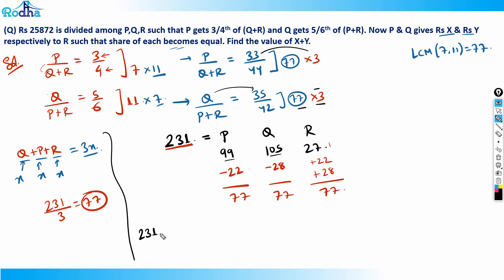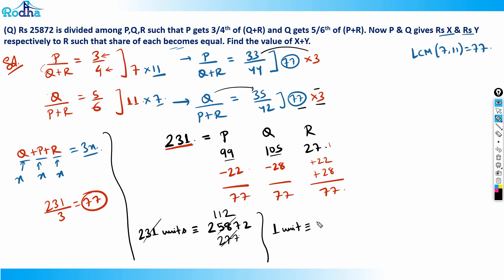The actual total amount is 25,872. So 231 ratio units equals 25,872. Dividing 25,872 by 231 gives the value of one unit equals 112.